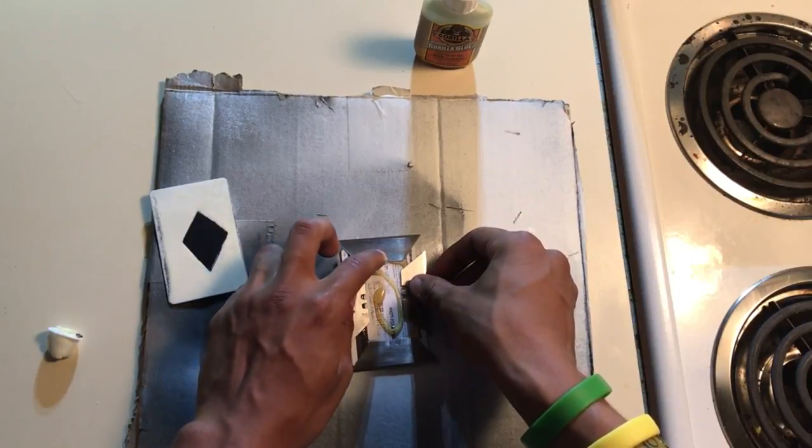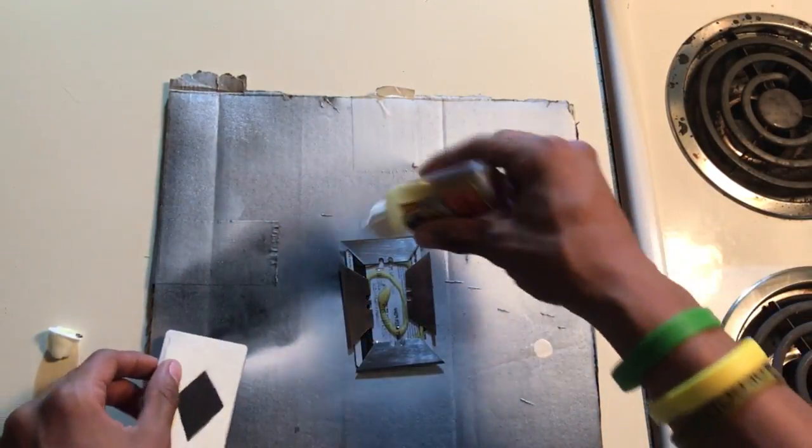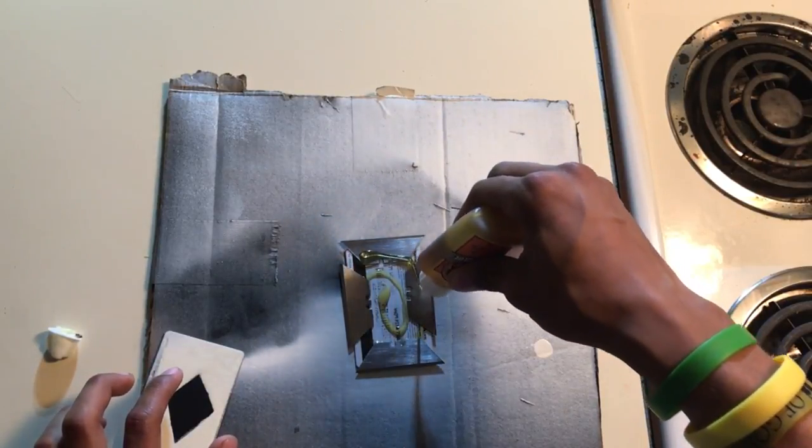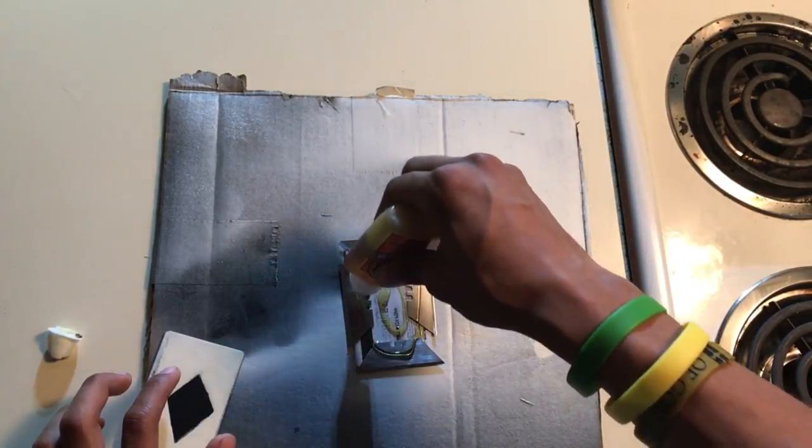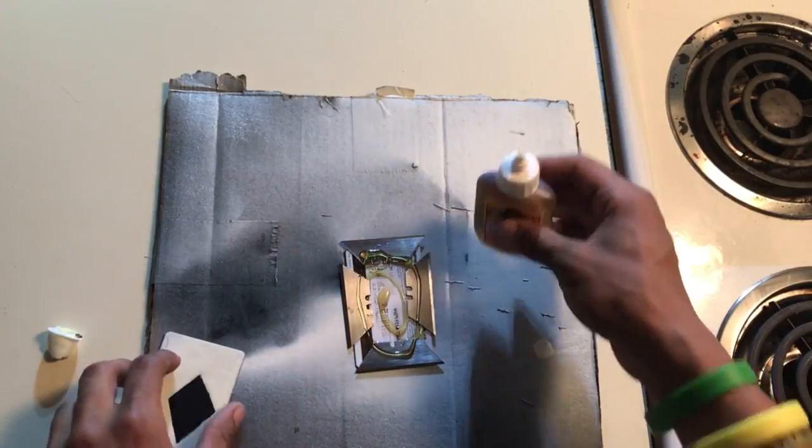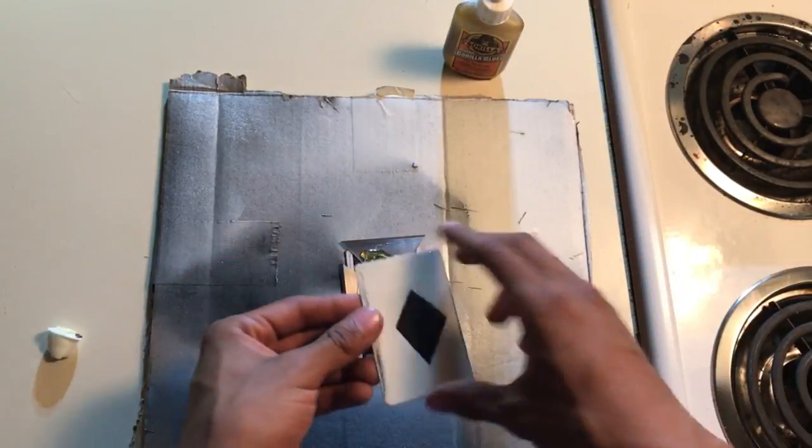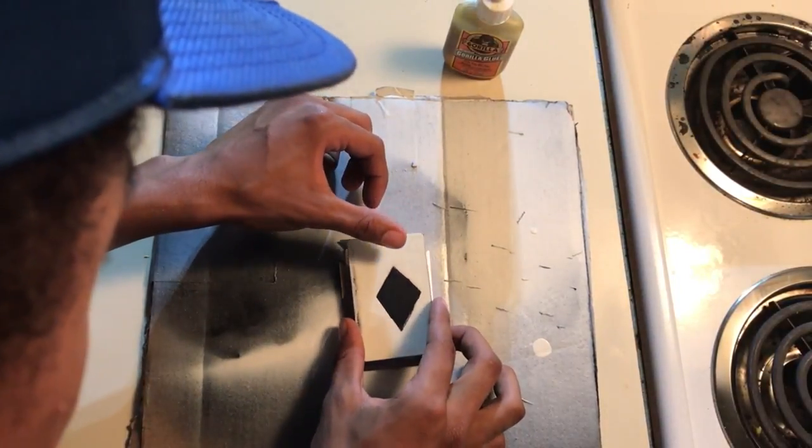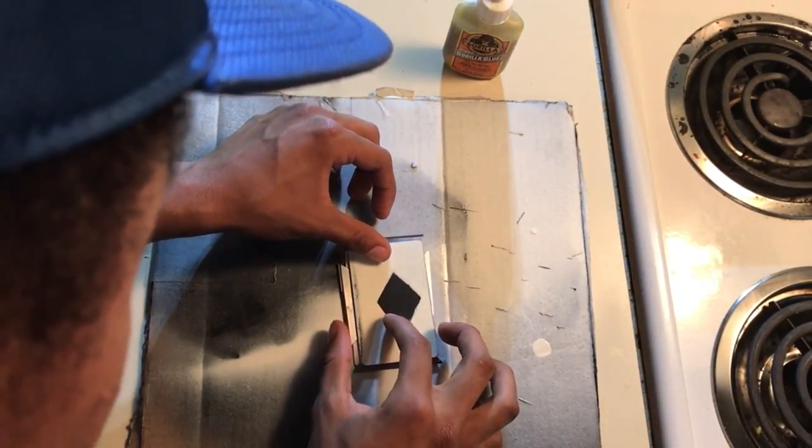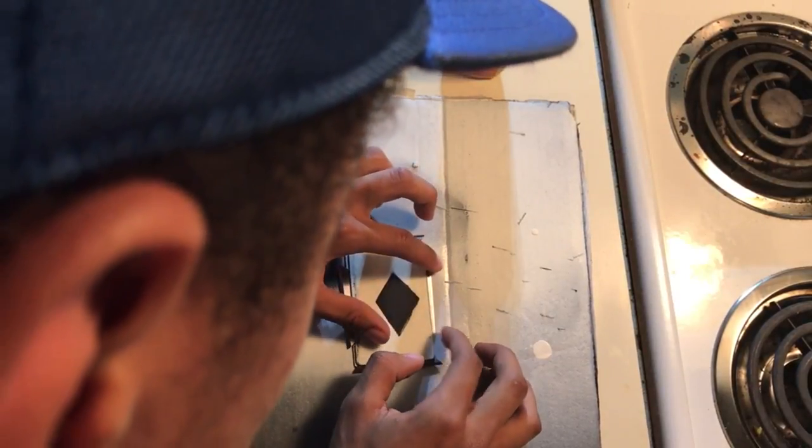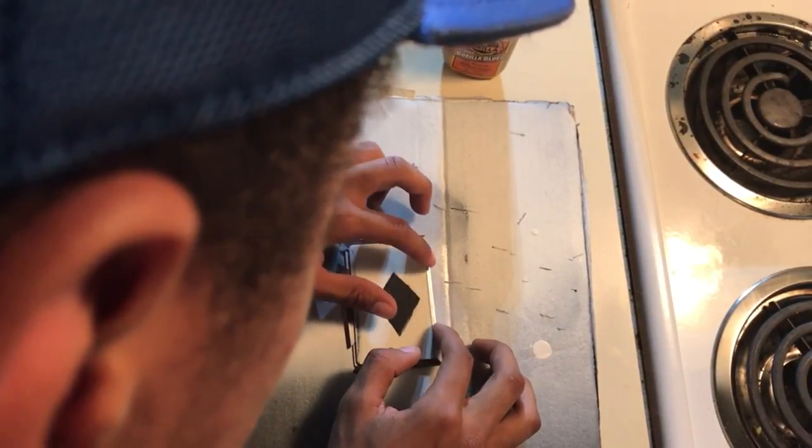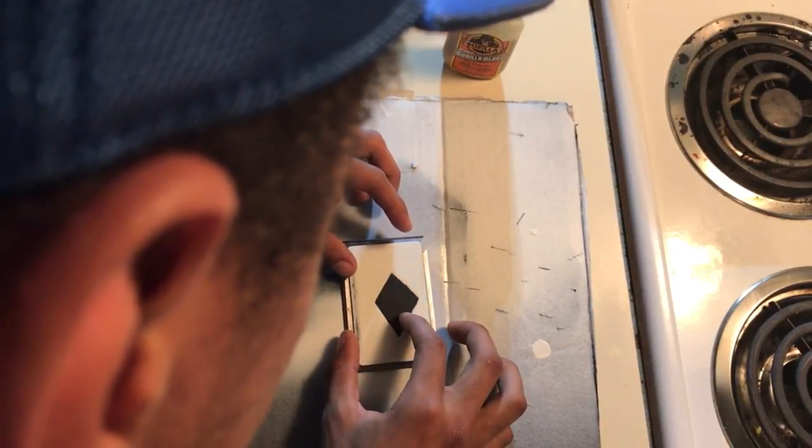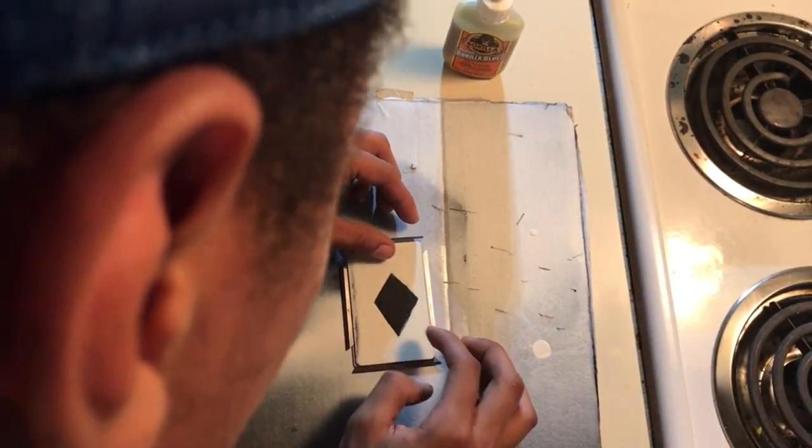Now, once you get your blades lined up, you're going to take your other card and your glue, you're going to glue around the top of the bladed parts just so it will stick nice and easy. You're going to take your card and easily, very gently, set it on top. Just like that. Now, make sure you adjust your blades so that they're exactly where you want them because this is your only chance. Once this glue dries, it's all you've got.